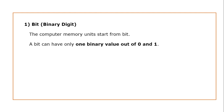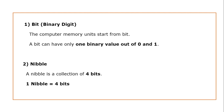Binary means 'bi', meaning 2, that is 0 and 1 — that is called binary. The computer memory unit starts from bit. Bit is the very smallest unit in computer memory, and a bit can have only one binary value out of 0 and 1. The second memory unit is nibble.